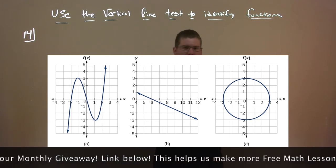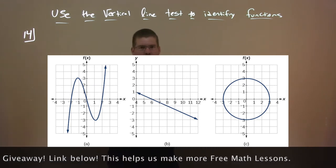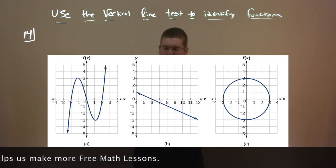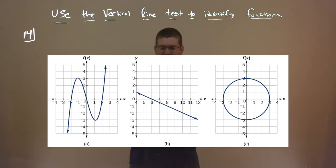But what about part C? Part C, we have a circle. If we put a line that goes straight through it, straight vertically through that, we would hit that circle twice, right? I mean, look at the Y axis. The Y axis is a vertical line there, and it touches that line twice. So that would fail the vertical line test.